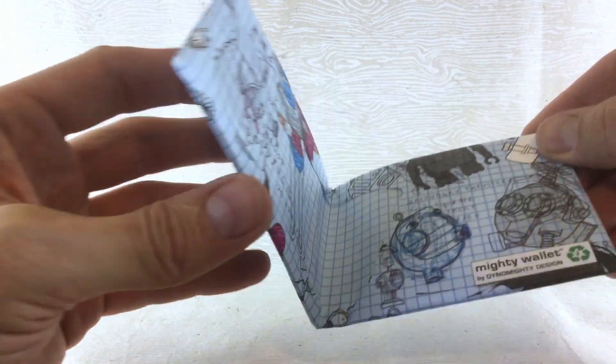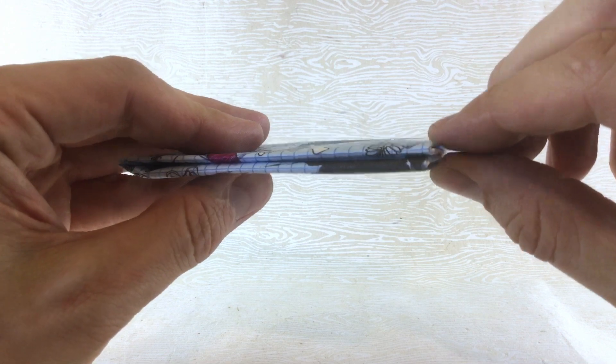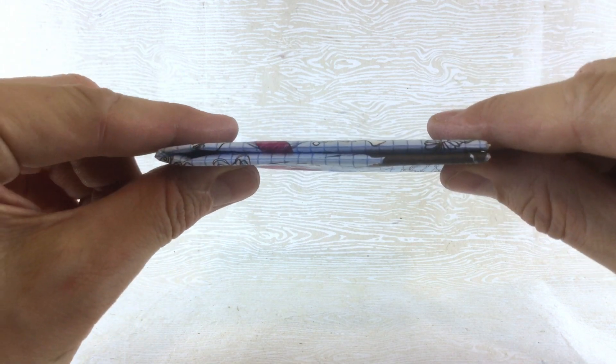And the Mighty Wallet being origami, it's also adjustable so it goes from being super slim, like this.